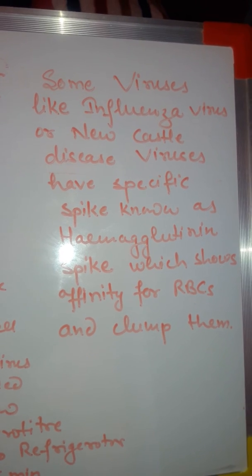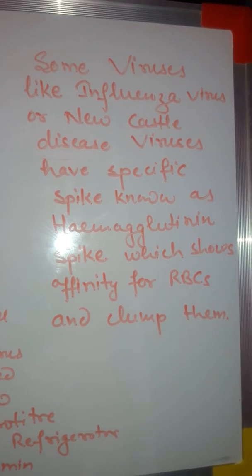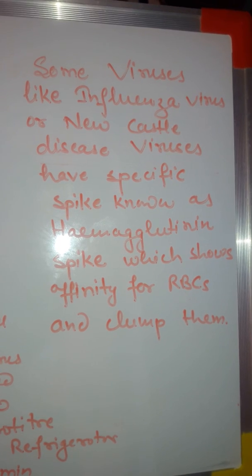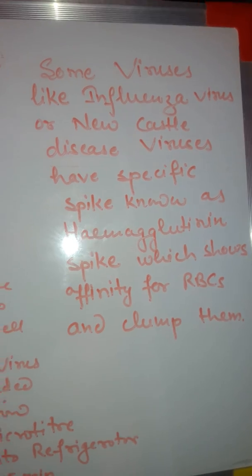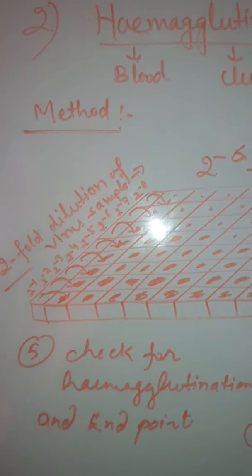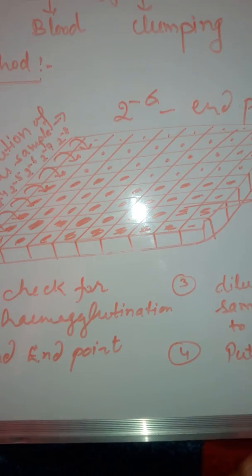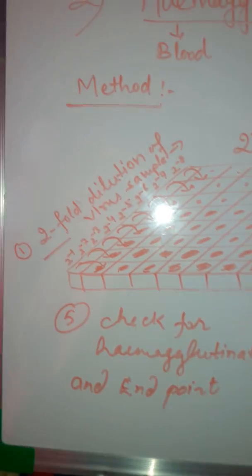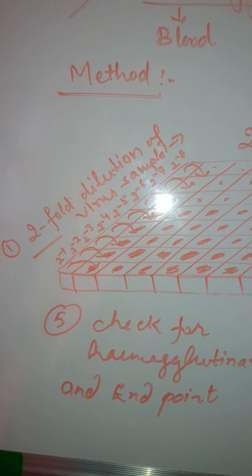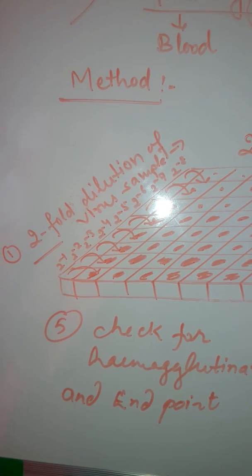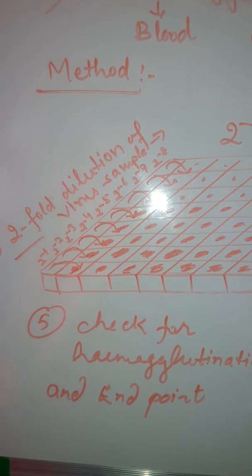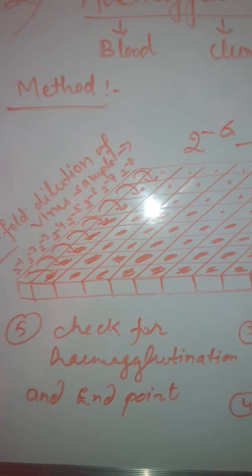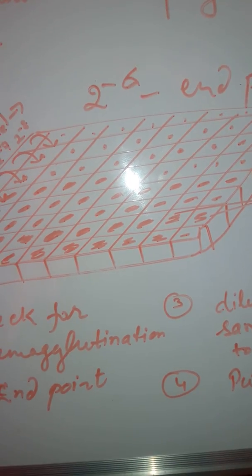The second method is the hemagglutination assay. Some viruses like influenza virus and Newcastle disease virus have specific spikes on their surface known as hemagglutinin spikes, which show affinity for RBCs and clump them. For this assay, we take a 96-well microliter plate. In the first row, we prepare the twofold dilution of the virus sample — 50 microliters of virus and 50 microliters of buffer — and in the rest of the wells we add RBCs.